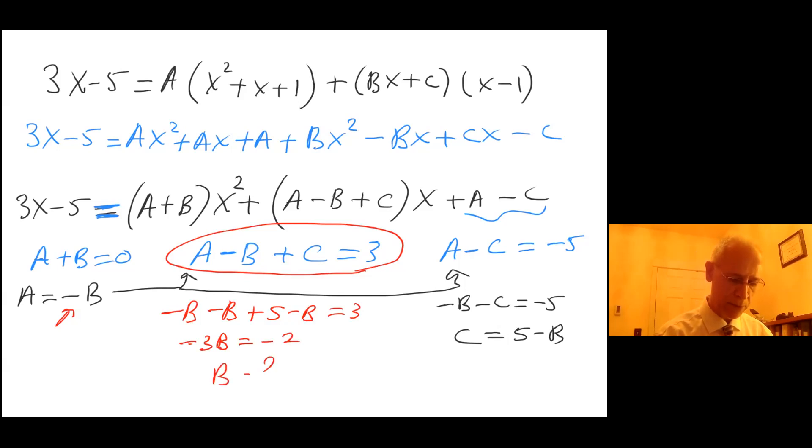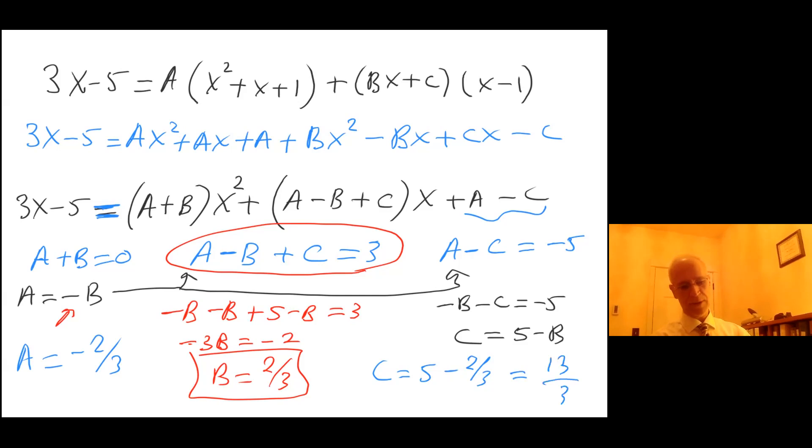So B equals 2/3. Since A equals the opposite of B, I can claim that A equals minus 2/3. And C equals 5 minus 2/3, so that's going to give me 4 and 1/3, which equals 13 over 3.